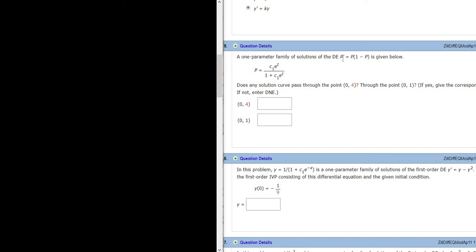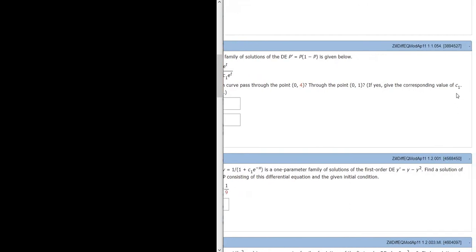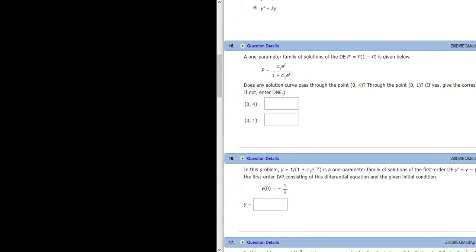A one-parameter family of solutions of the DE P' equals P times (1 minus P) is given below. The question says: does any solution curve pass through (0,4), then through (0,1)? If yes, give the corresponding value of C1. And if not, then enter D and E. Okay, let's work through it.